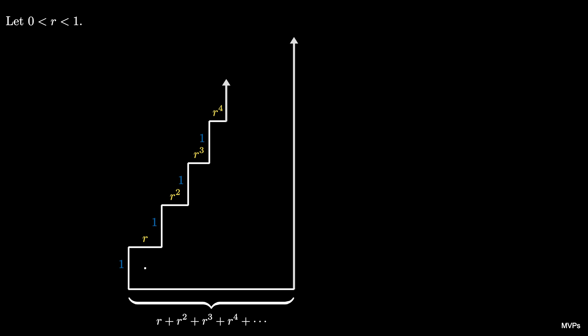First we decompose the staircase into columns of rectangles. The first one has height 1 and width r so it contains an area of 1 times r. The next one has height 2 and width r squared so it contains an area of 2 times r squared.